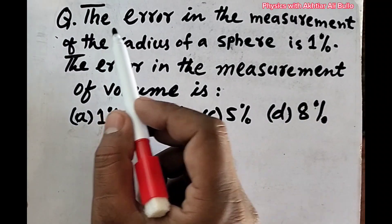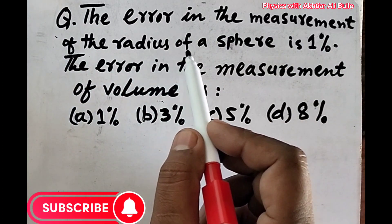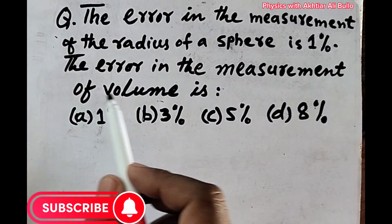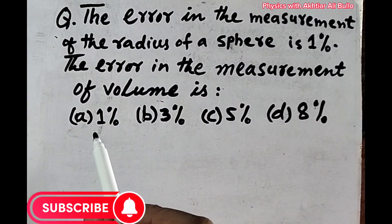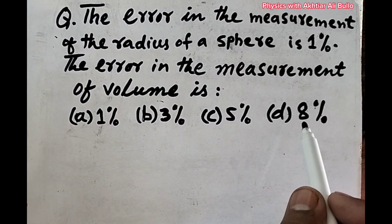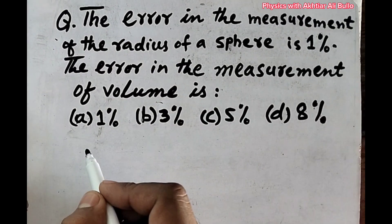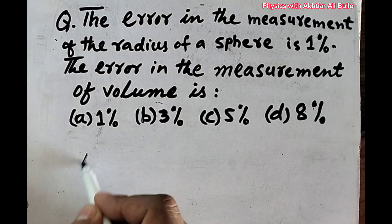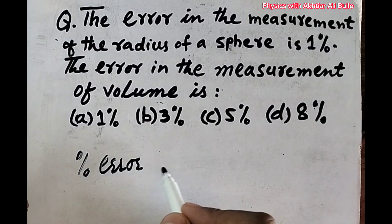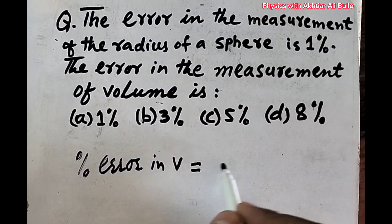The question is: the error in the measurement of the radius of a sphere is 1%. The error in the measurement of volume is: a) 1%, b) 3%, c) 5%, d) 8%.